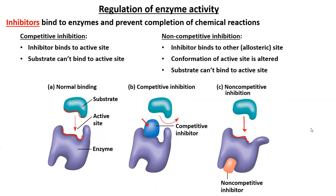The non-competitive inhibitor does not bind to the active site; instead it binds somewhere else on the enzyme — we say it's an allosteric site, meaning elsewhere. When that non-competitive inhibitor binds to the enzyme, the enzyme will change its shape slightly, including the active site. If we compare the active site before and after, we see it's not the same shape — it's slightly modified. Because it's slightly modified, the substrate will not be able to bind, or will bind less well, and that would either decrease or prevent the chemical reactions from taking place.